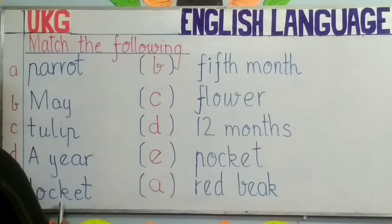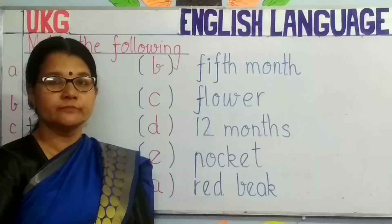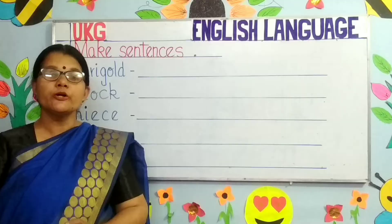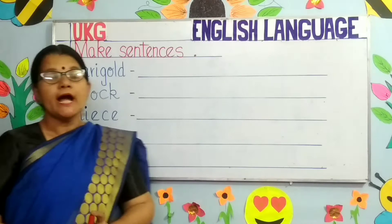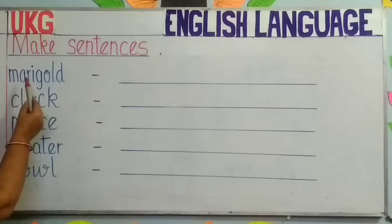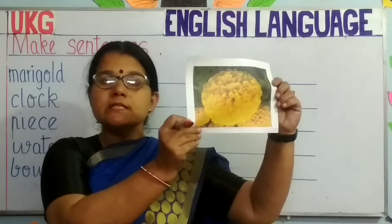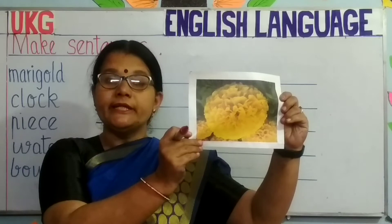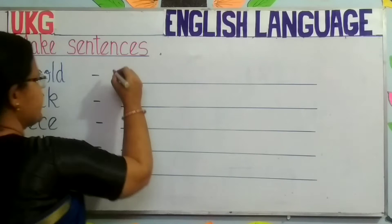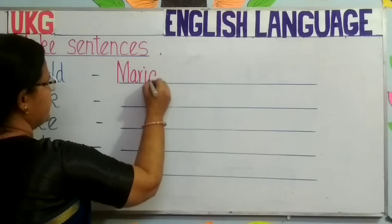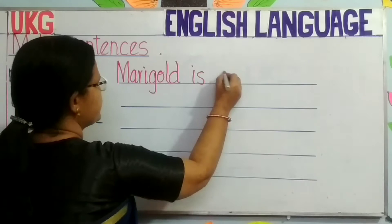You will need to practice this at home. Go on to our next topic now: Make sentences. Children, I will show you a few pictures and objects which will help you to make meaningful sentences with the given words. The first word on the board is Marigold. What is Marigold? This is Marigold — it is a flower. You can write: Marigold is yellow in color, or Marigold is a flower. I am writing: Marigold is a flower. Begin with a capital letter, end your sentence with a full stop.